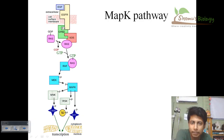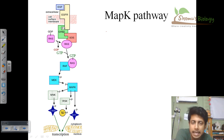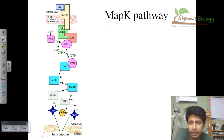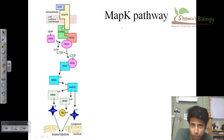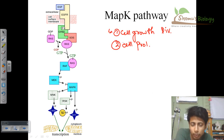Let's talk about the MAP kinase pathway, also called the MAPK pathway. This pathway is related to cell proliferation and cell division — it ultimately provides the cell with different proteins and enzymes to divide and proliferate. Different enzymes and signaling molecules work together to make a cell grow and divide properly. If the MAP kinase pathway gets activated too much, it can turn cells into malignant cells, ultimately leading to cancer.